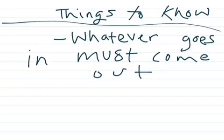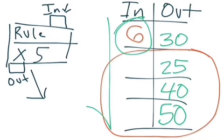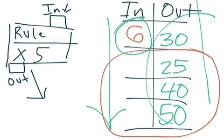Let's start with what's my rule. Things to know is whatever goes in must come out. You probably don't understand that, so let's explain it. In what's my rule, you see that there's in and out. The in is what number is in this column. The out is what's in this column.